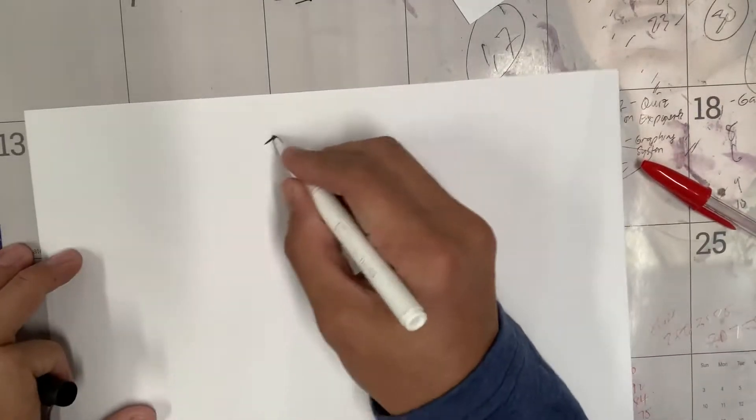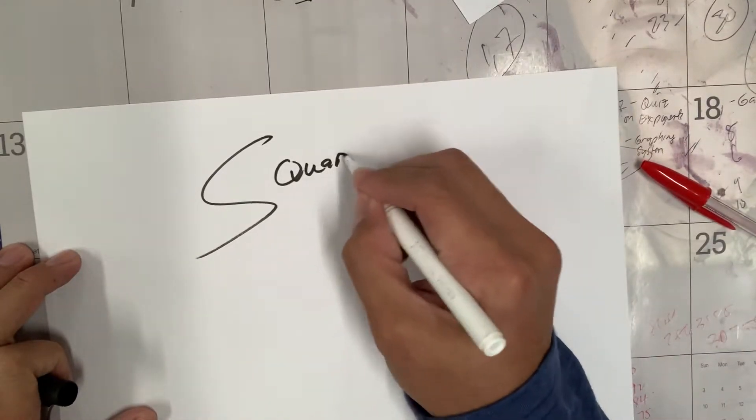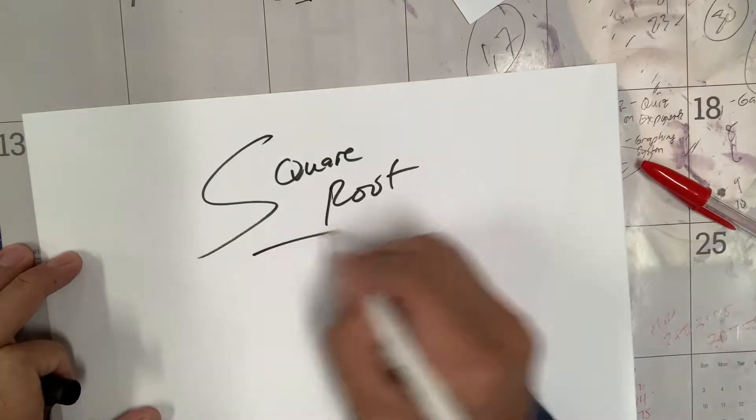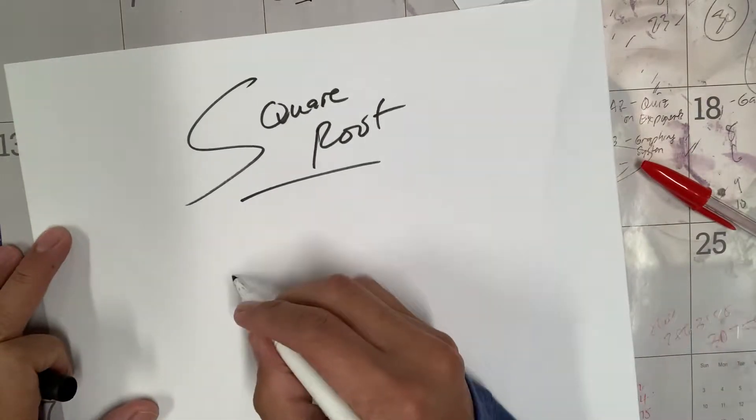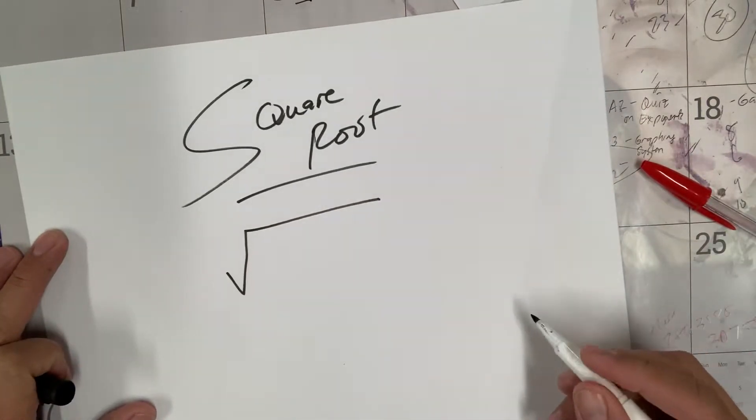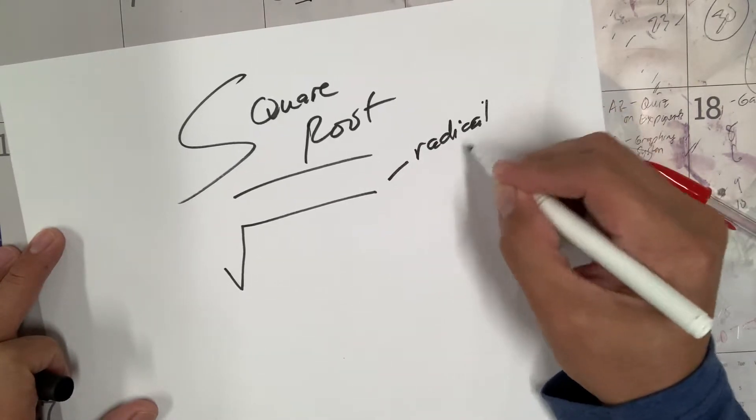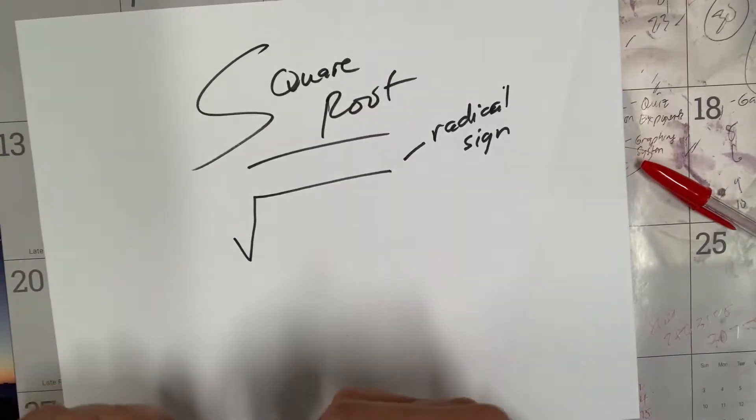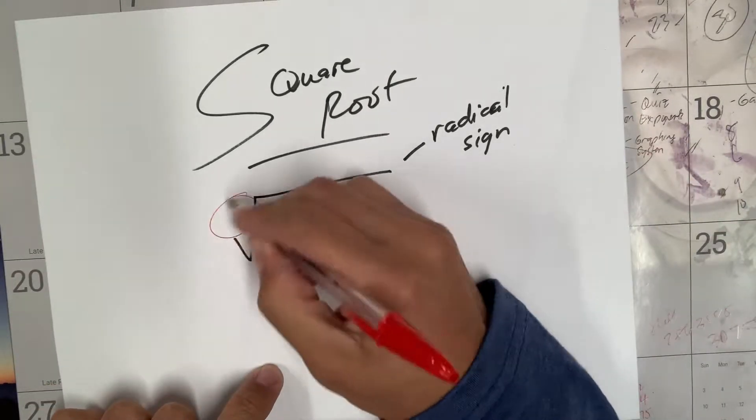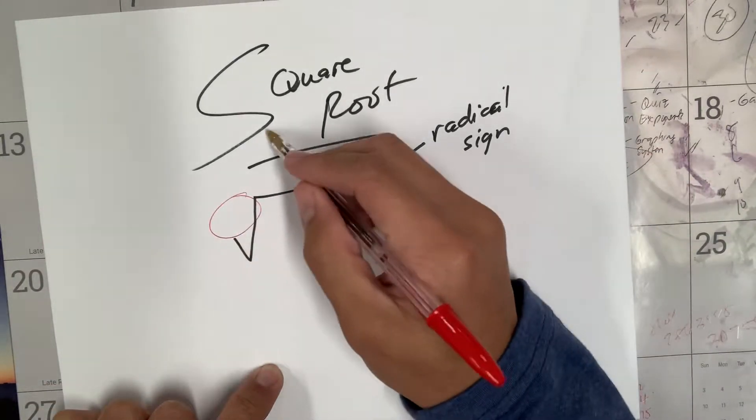Today we're going to learn about square root. Square root is in this kind of form - that's called a radical sign symbol. A square root has an invisible number which we write here. From the word square, what do you think this invisible number is? It's not one, it's not three, it's not four, but it's invisible.